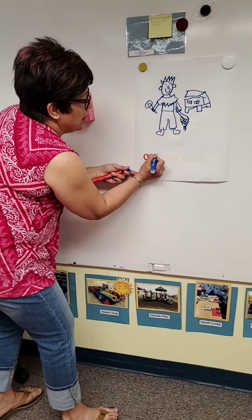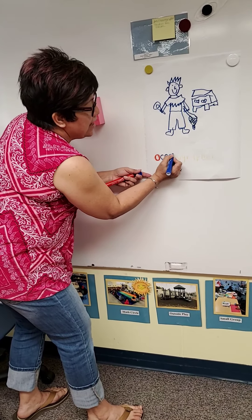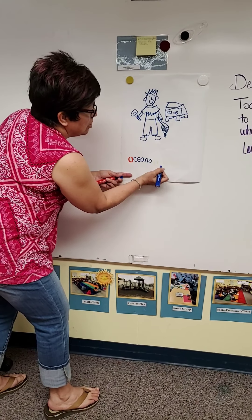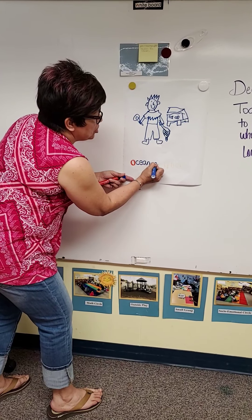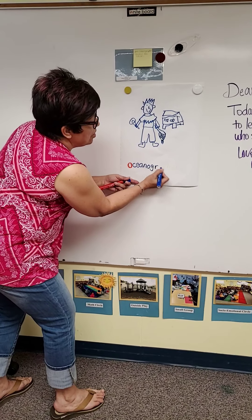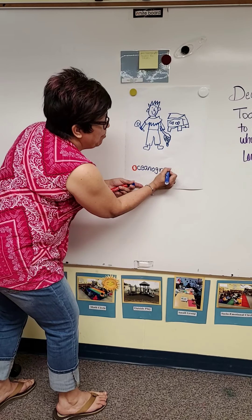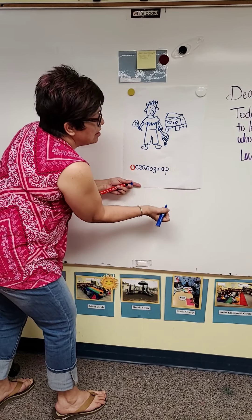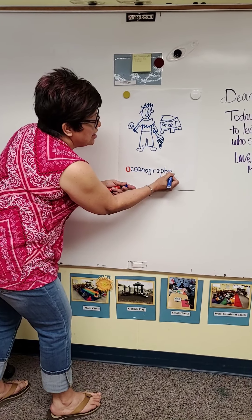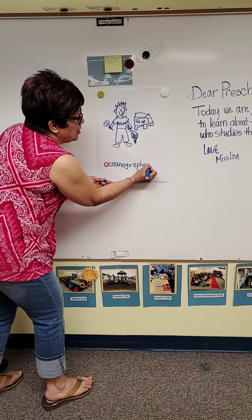And then we have E, A, N, O. And the next one makes the "j, j, j" sound — it's G. Then R, A, P, H, E, R. And the last letter we hear in oceanographer is the letter R.